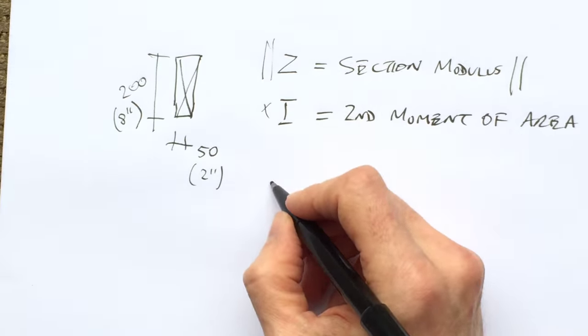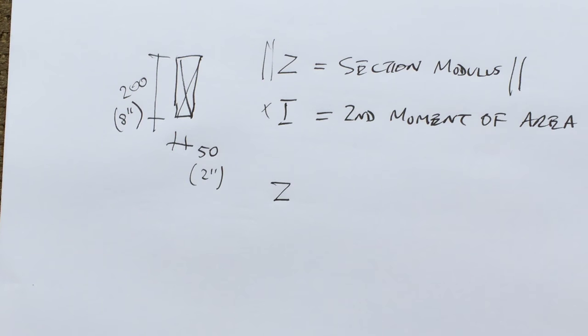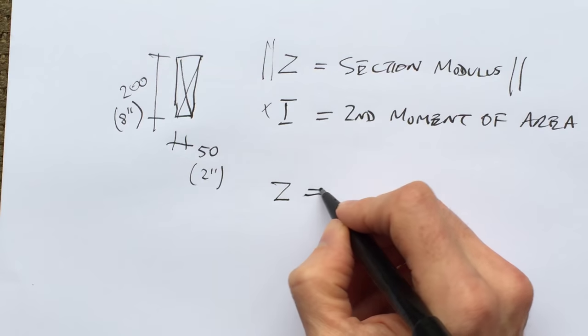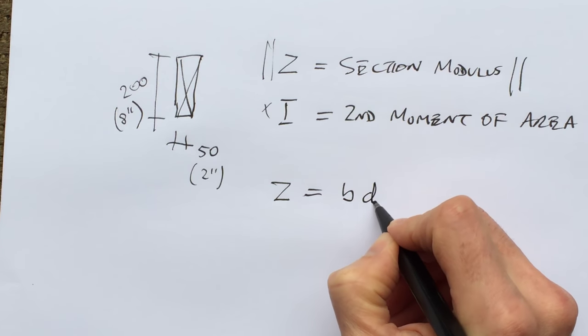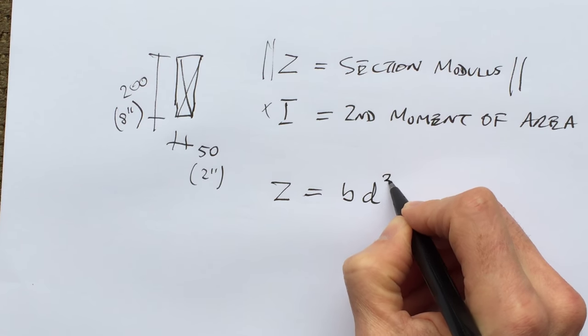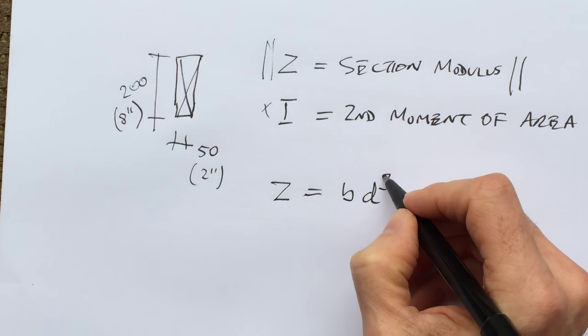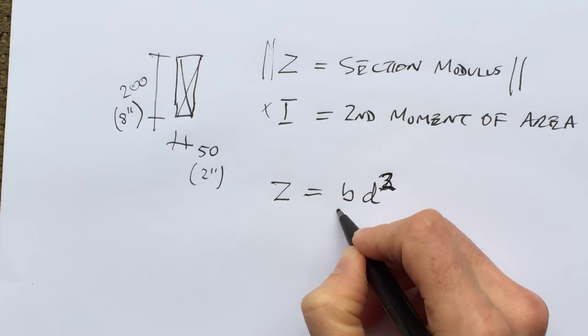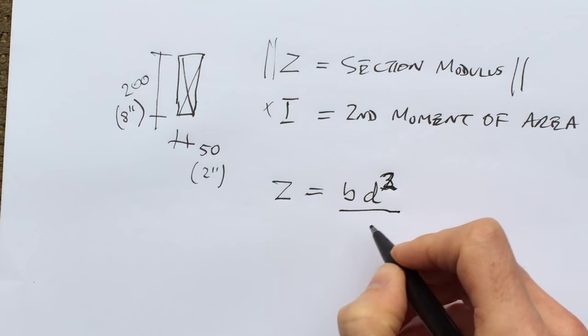So section modulus for a rectangular section is breadth times depth squared over six.